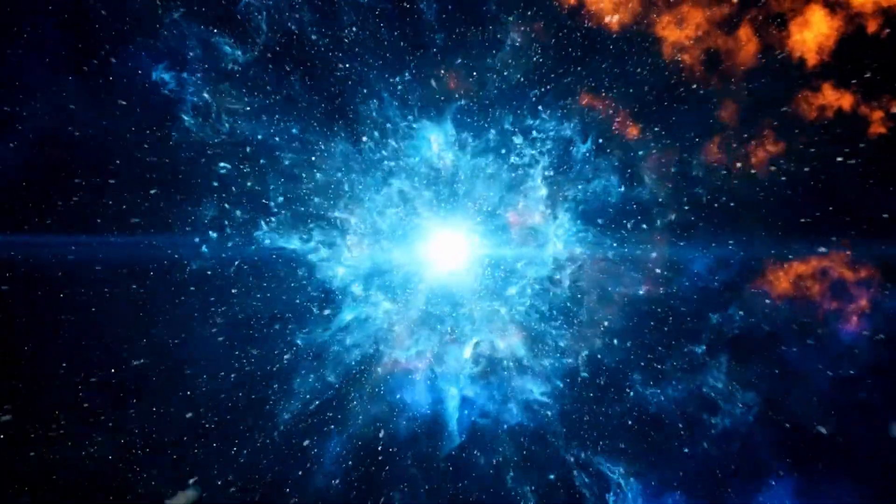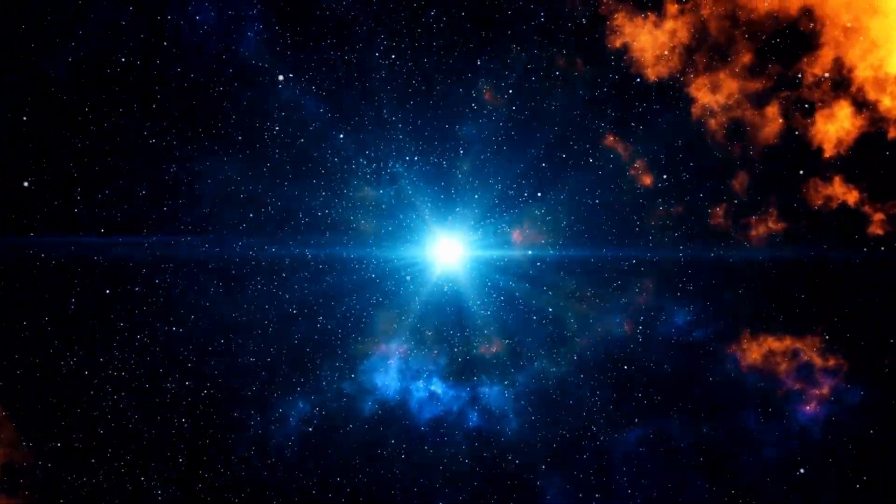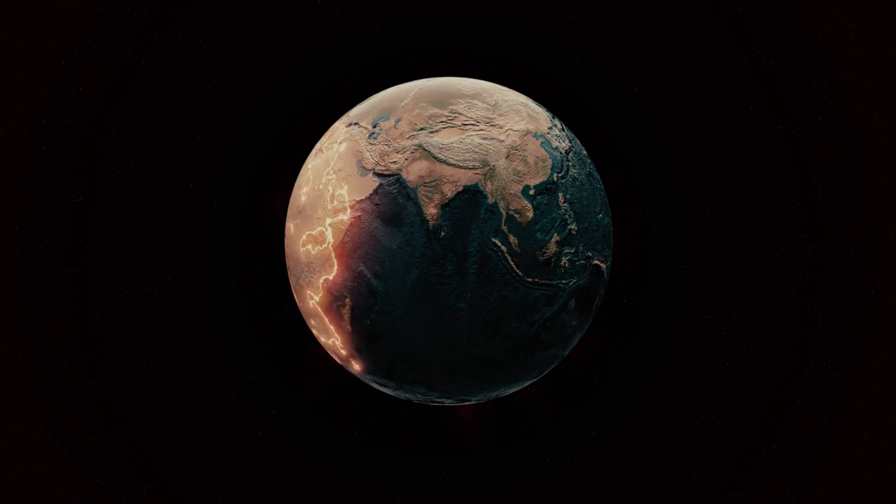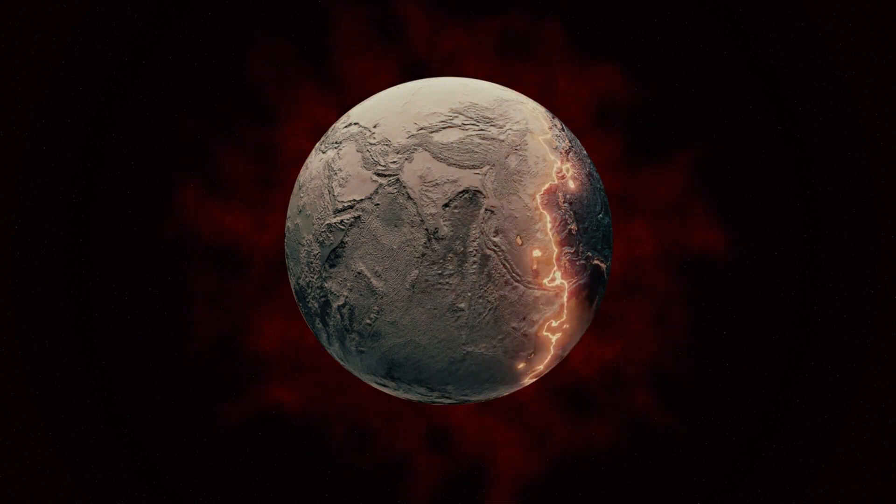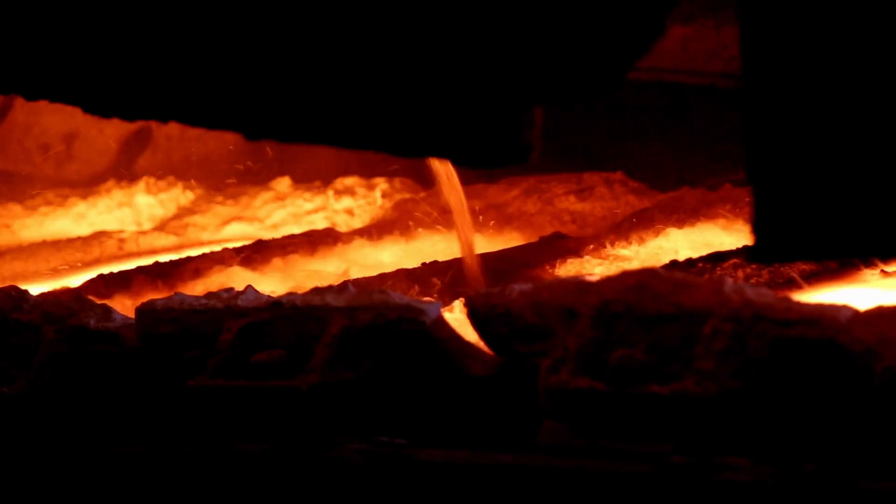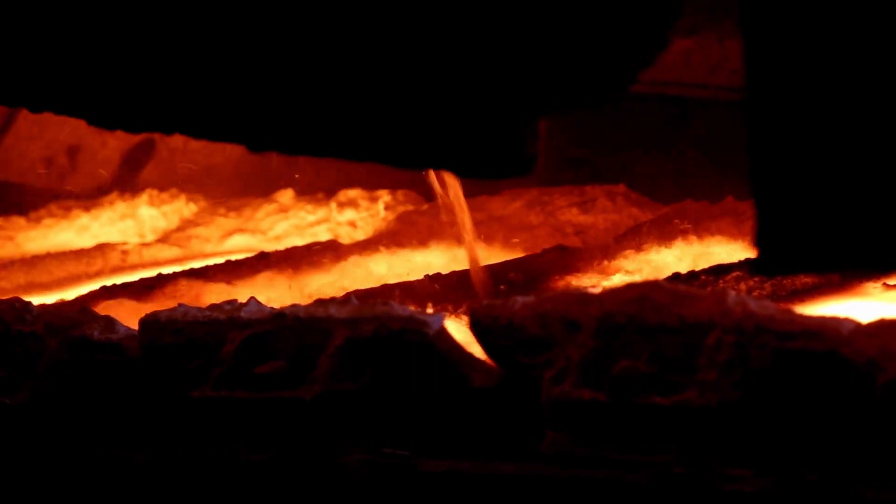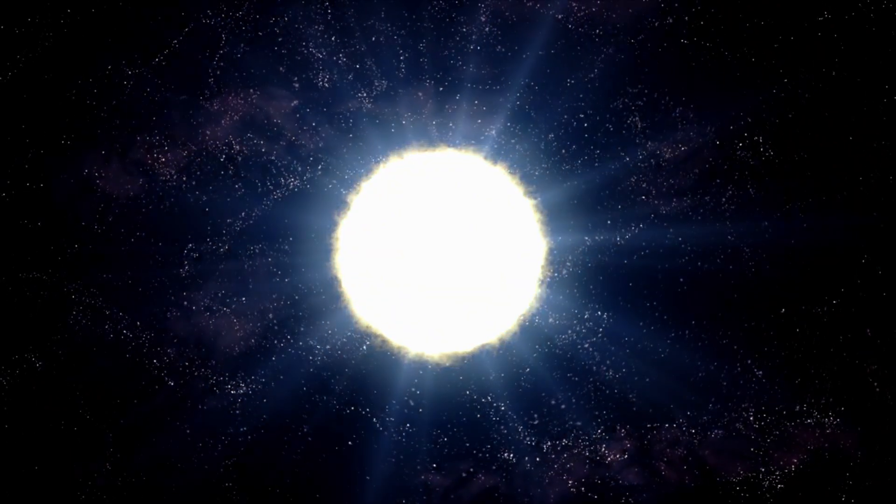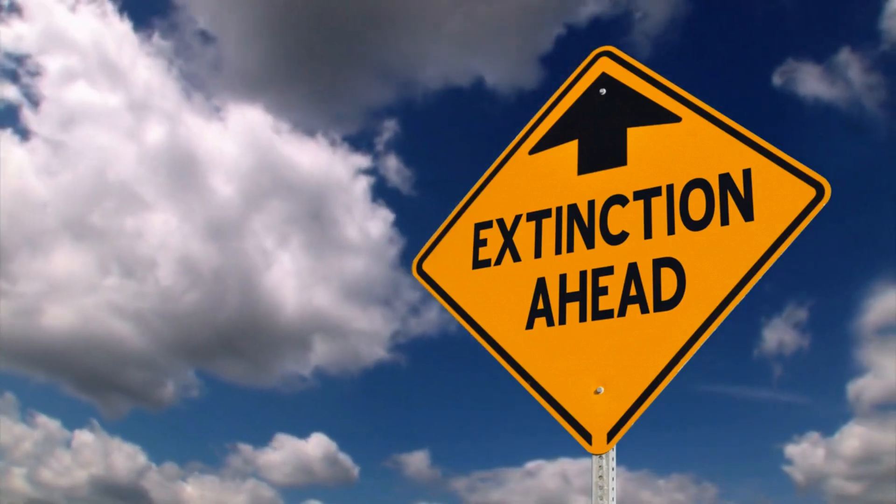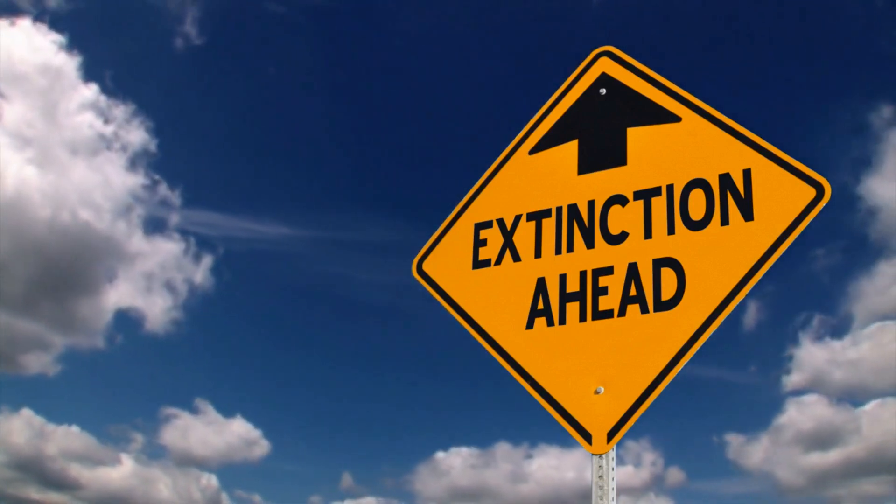Based on geologic evidence from nearby supernovae 2.5 million and 8 million years ago, Dr. Brian Thomas, an astrophysicist at Washburn University in Kansas, USA, has modeled the biological impacts on the Earth's surface. Scientists discovered abrupt changes in the fossil record at the Pliocene-Pleistocene boundary 2.5 million years ago, particularly in Africa. This period's geological reporting also revealed an increase in the global concentration of Iron 60, a radioactive isotope produced by supernova explosions. There was no mass extinction of all living things, but there were fewer animal species and a shift in vegetation.